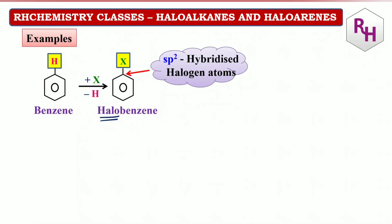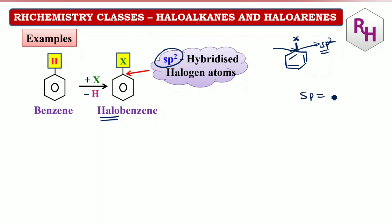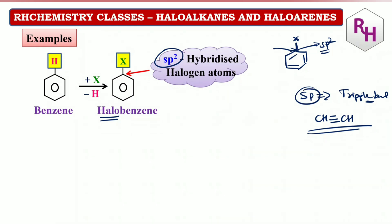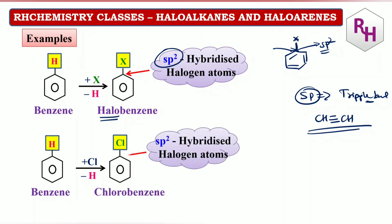For example, this is benzene. Benzene ring — hydrogen replaced by halogen — we call it halobenzene. Remember, halogen is attached to which carbon? SP2 hybridized carbon. What you need to identify is SP2 — double bonded carbon. SP hybridization always has a triple bond — for example, CH triple bond CH is alkyne, having SP hybridization. So the example here is chlorobenzene: halogen attached to SP2 hybridized carbon. This is nothing but an example of haloarenes.